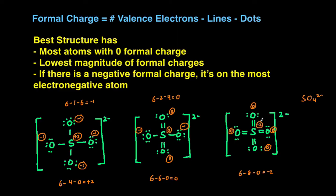Now that we have the formal charge of each of the atoms, we can use these rules to determine which structure is the best. The best structure has the most number of atoms of zero formal charge, it has the lowest magnitude of formal charges, and then if there is a negative formal charge on an atom, it's on the most electronegative atom. So let's use these guidelines to determine which of these structures is the best.